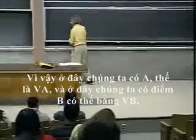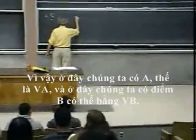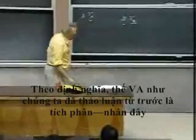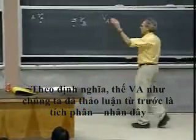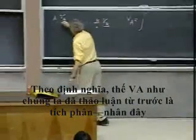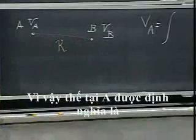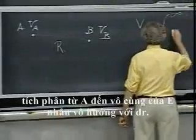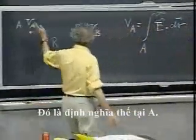Here we have point A, where the potential is V_A, and here we have point B, where the potential is V_B. By definition, the potential of V_A, as we discussed before, is the integral going from A to infinity of E dot dr. That is the definition of the potential of A.